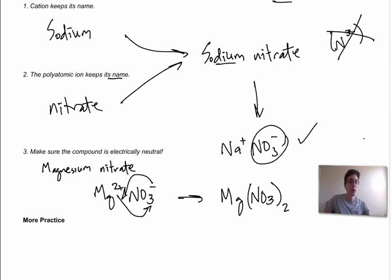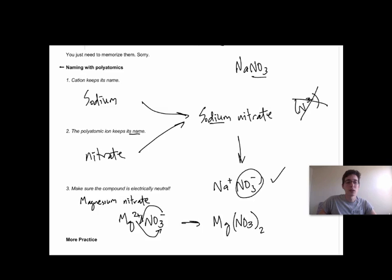So polyatomic ions are even easier, really, than the binary compounds, except for the fact that you just have to know their names, and you need to memorize them. So get going on that today, and we'll be talking about this as we go.